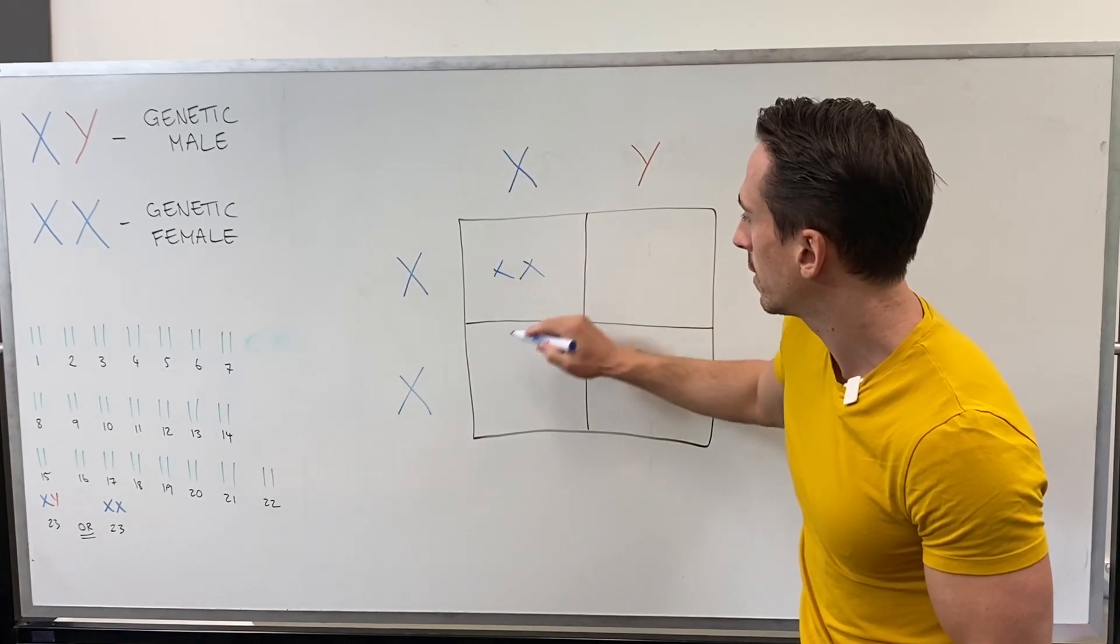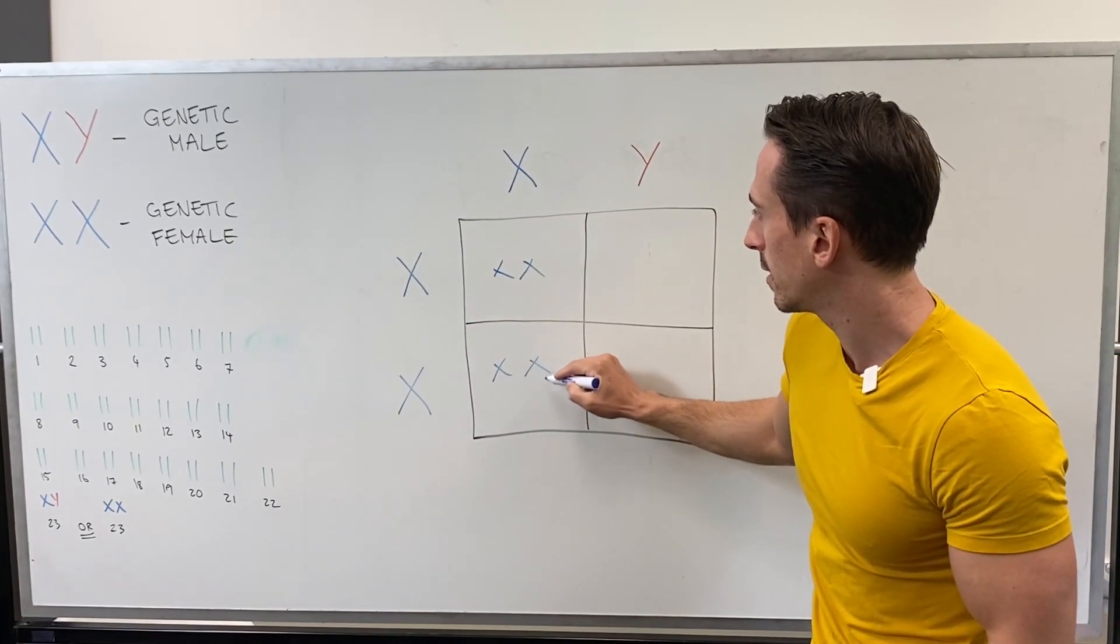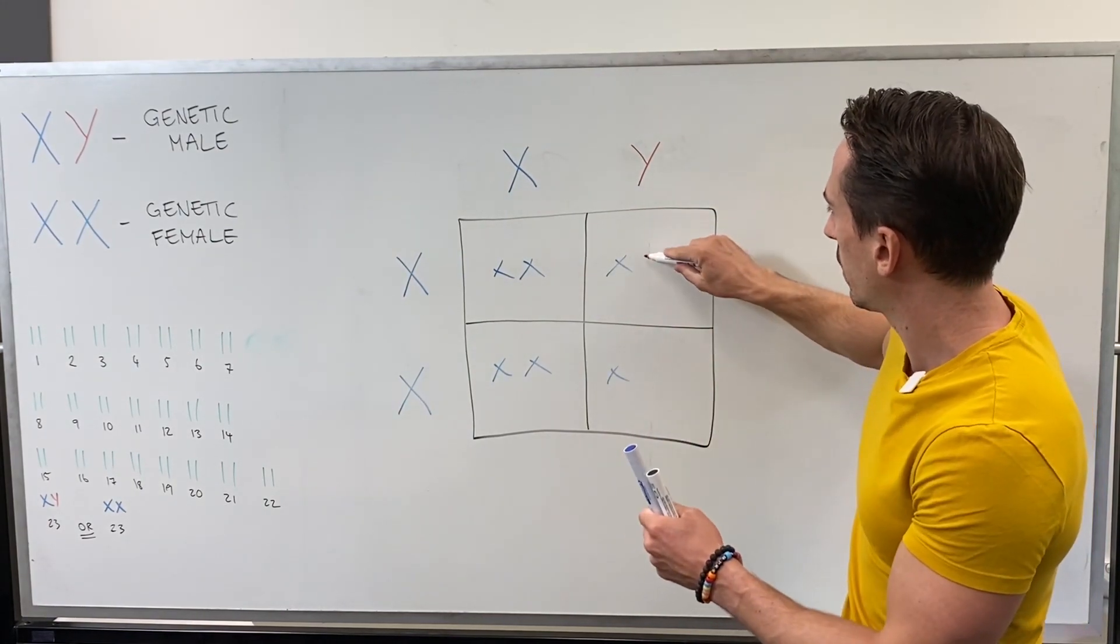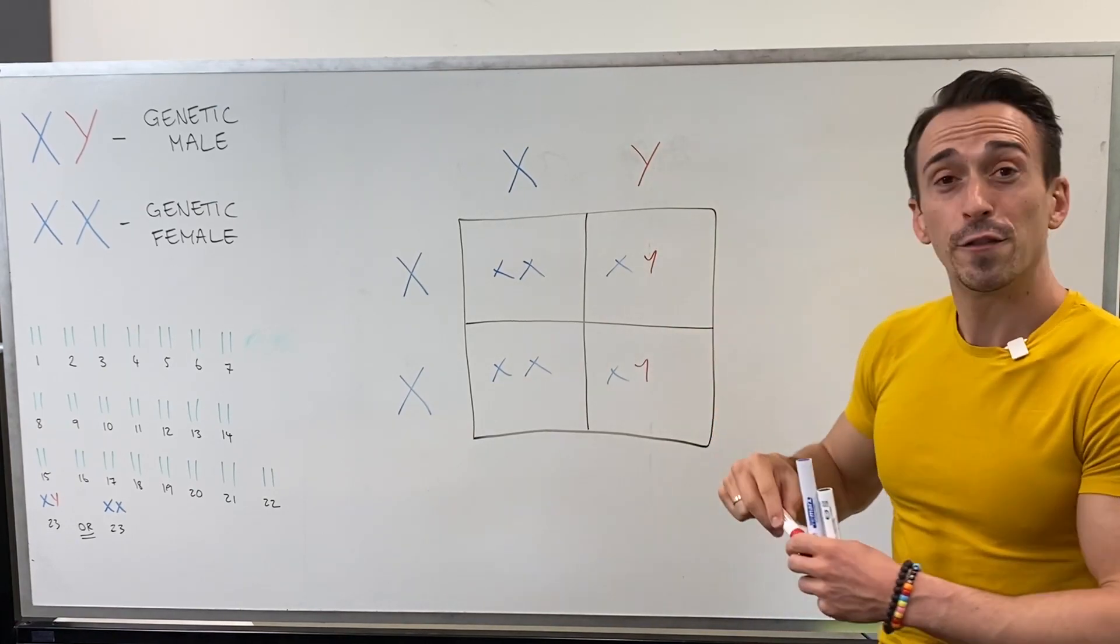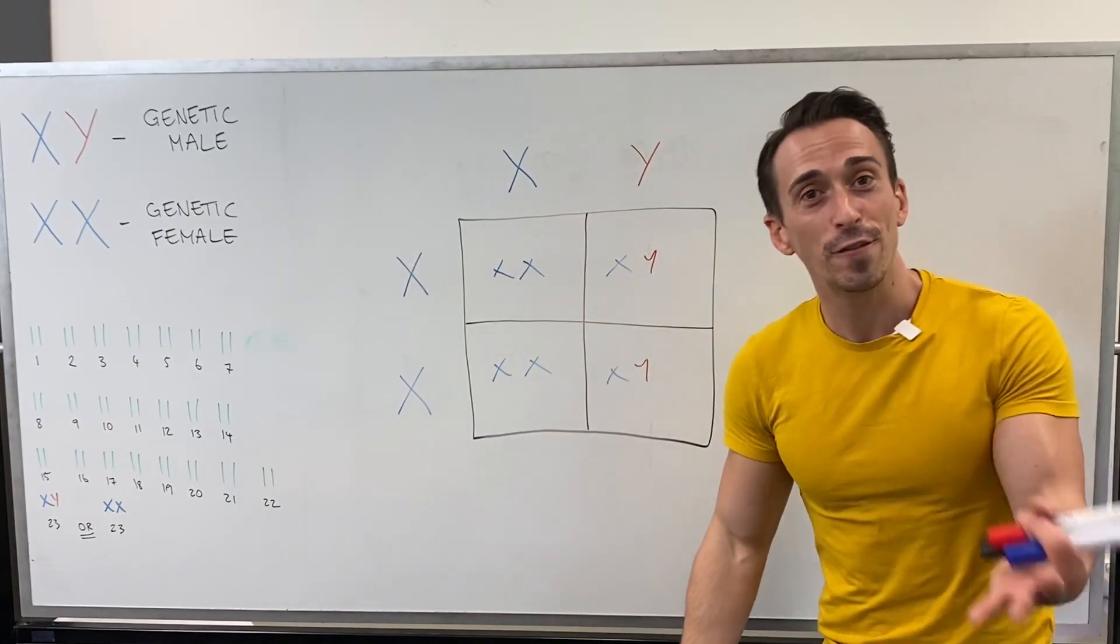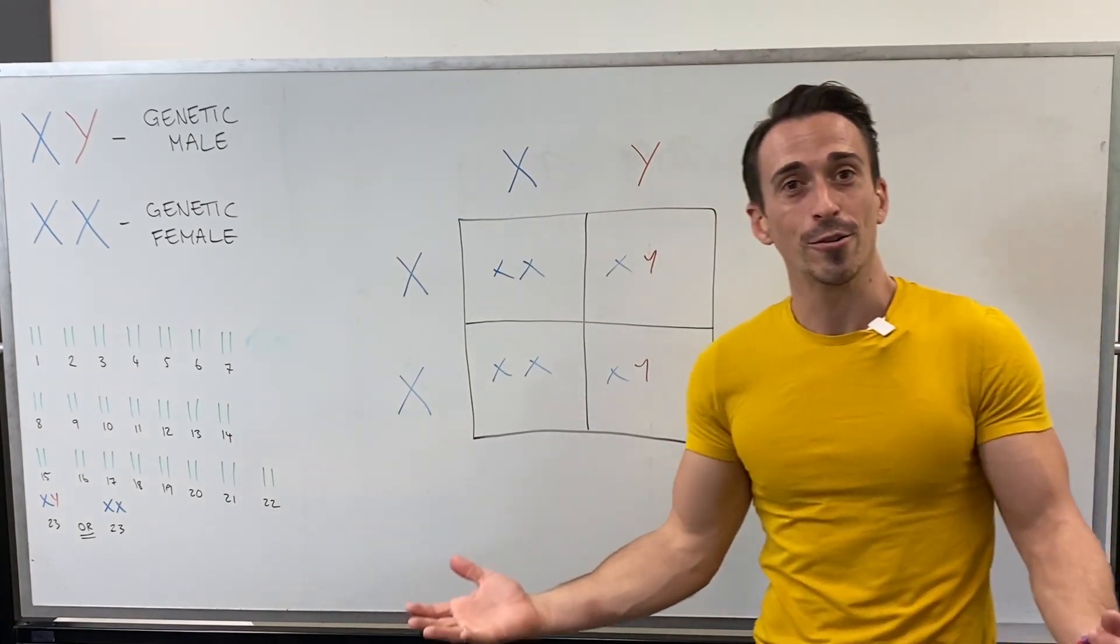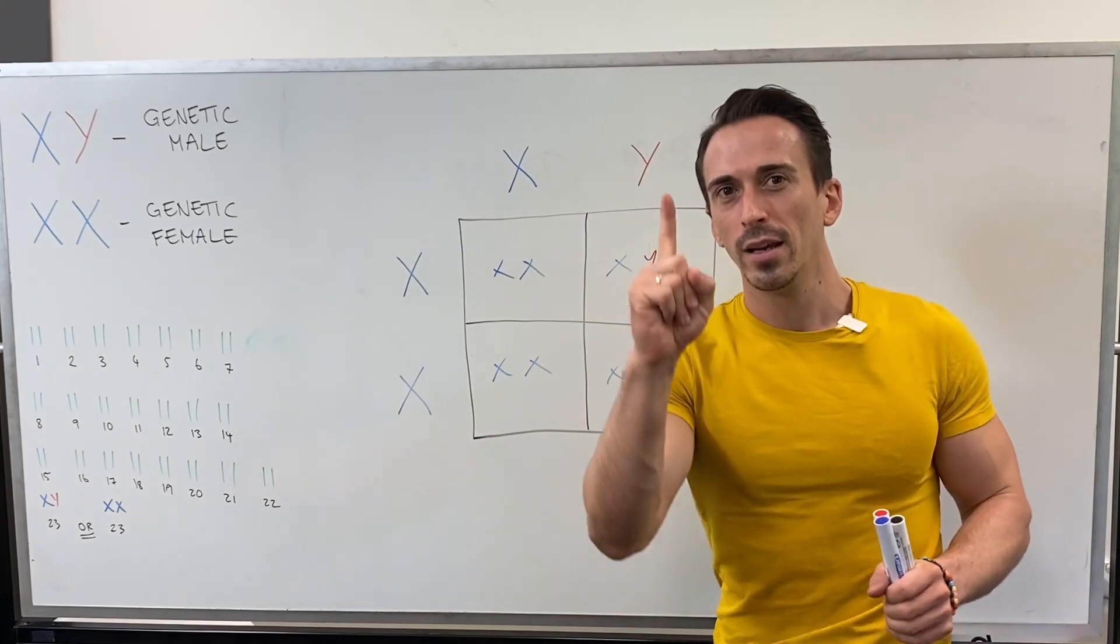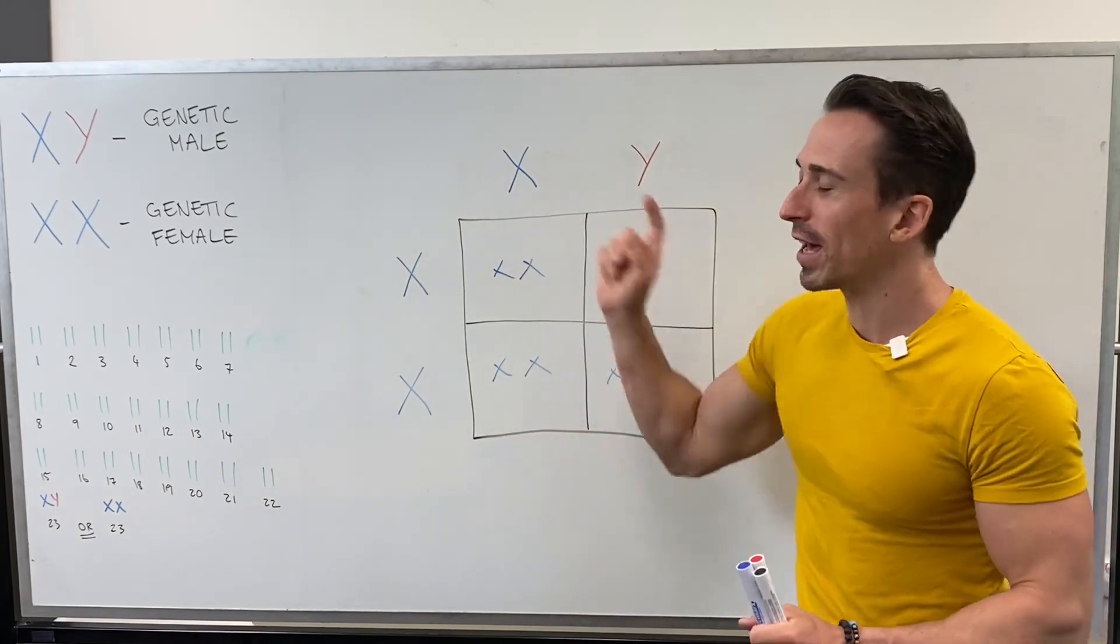XX, XX, XY, XY, it's 50-50. There's a 50% chance female offspring, 50% chance male offspring. This is how the whole process works, but we're going to talk about certain traits inherited on that X chromosome.